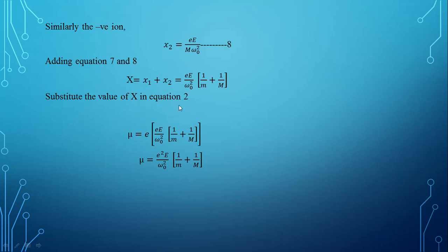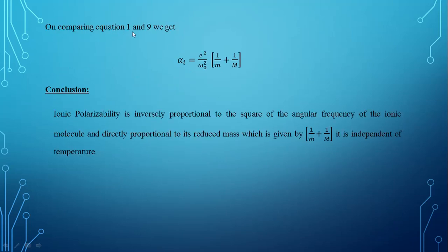Substituting the value of X into equation 2, we get mu equal to e squared times E divided by omega 0 squared, into (1 by m plus 1 by M). On comparing equations 1 and 9, we get the ionic polarizability alpha_i equal to e squared divided by omega 0 squared, times (1 by m plus 1 by capital M). Ionic polarizability is inversely proportional to the square of the angular frequency of the ionic molecules and directly proportional to its reduced mass, that is (1 divided by m plus 1 divided by M).